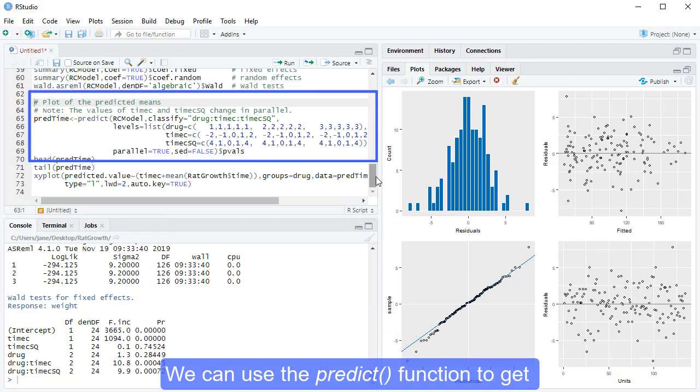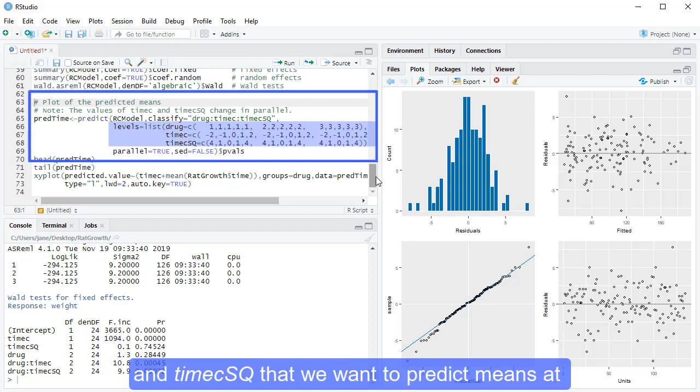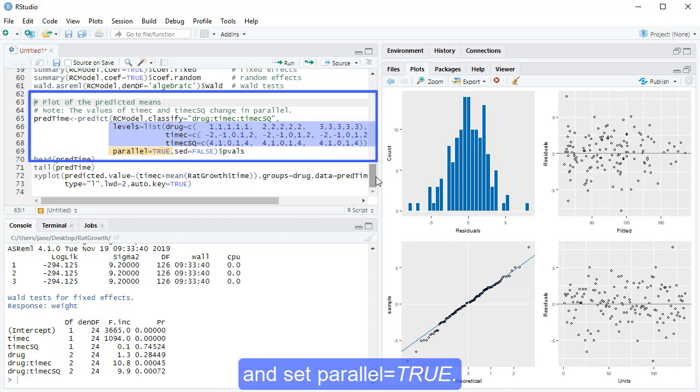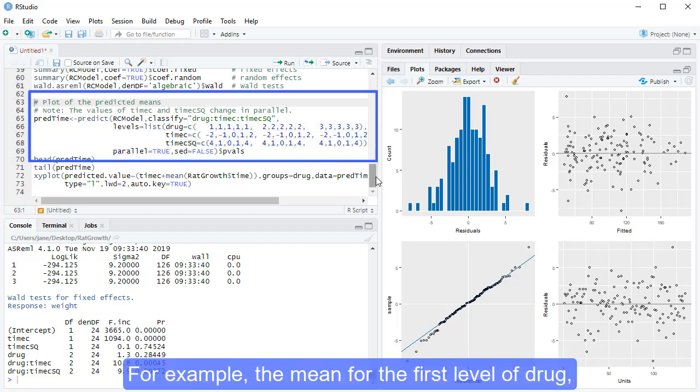We can use the PREDICT function to get the predicted mean weight over time for each drug. As time and time-squared change in parallel, we must list all combinations of drug, timec, and timec-squared that we want to predict means at, and set parallel equals true.